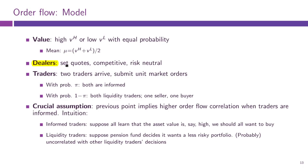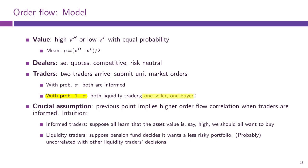So we have at least a couple of dealers who set quotes. Dealers are as usual competitive and risk neutral. And we have two traders - or more correctly to say, there are two orders in the market. These two orders arrive simultaneously, so you can think that this is one trader submitting two different orders.